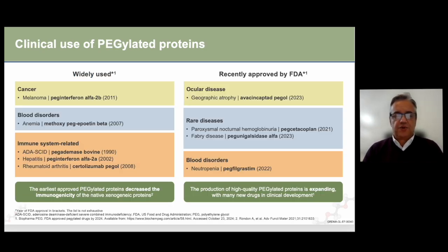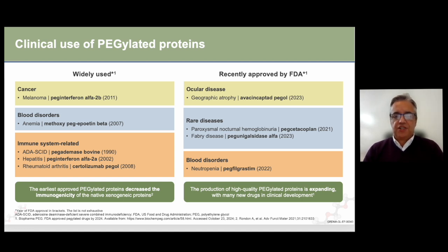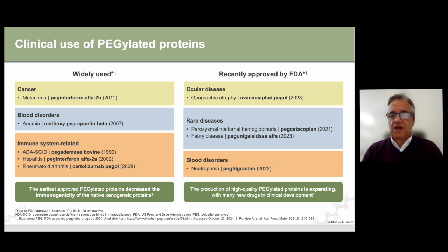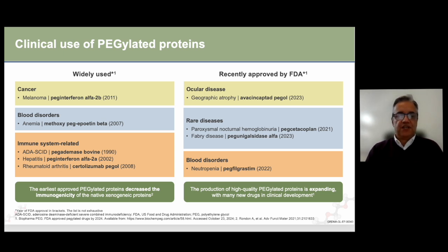The clinical use of pegylated proteins is starting to have widespread adoption in clinics. In cancer, blood disorders, and immune system-related indications, pegylated proteins decrease the immunogenicity of native antigenic proteins. Recently FDA-approved pegylated drugs include those targeting ocular diseases, rare diseases such as Fabry disease with pegunigalsidase alpha, and blood disorders like neutropenia with pegfilgrastim. The pipeline continues to grow, showcasing the technique's potential to produce optimal drug candidates.